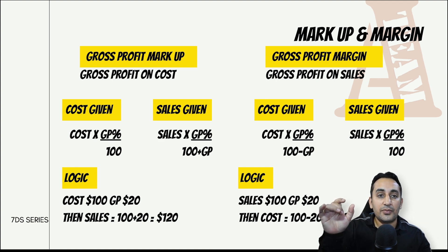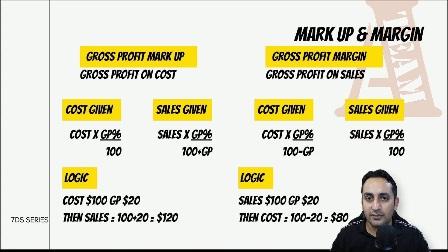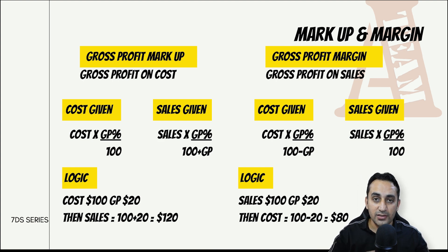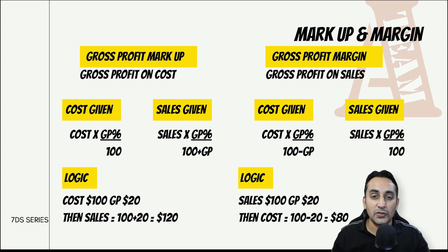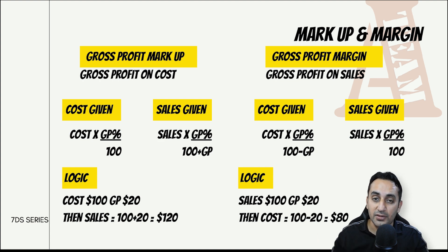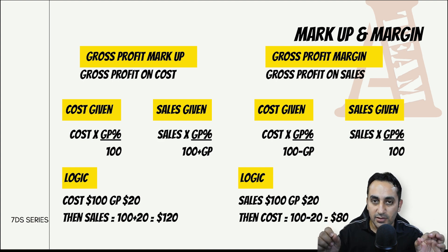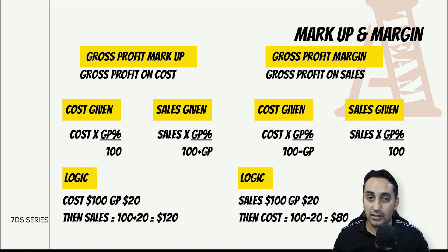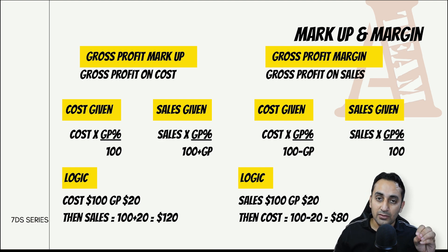Logic देखें - markup दे रखा है तो मान लो cost हमारा $100 है। Gross profit 20% है तो gross profit $20 हो गया। Sales = cost + gross profit = $120। अब अगर markup में cost directly दिया है तो 100 से divide करेंगे, और अगर cost नहीं है sales है तो 100 + 20 = 120 से divide करेंगे, यानी 100 plus the rate of gross profit। तो cost का equivalent amount 100 और sales का equivalent amount 120 होगा।